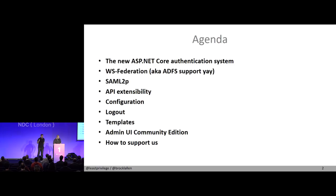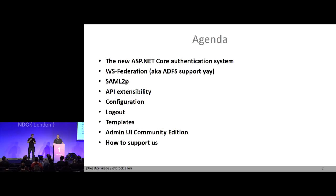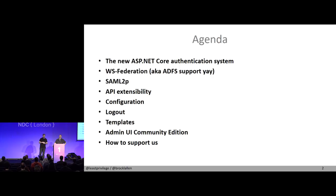We have a lot of things to go through — a lot of little improvements, a lot of big improvements, a lot of new things. But the one thing I want to really focus on, which is what affects everyone when moving to ASP.NET Core version 2, is the new authentication system. Identity Server itself — think of it as an extension to the authentication system of ASP.NET Core to give you protocols like OpenID Connect support and OAuth, the server side of these things. So we are very close to the authentication system.